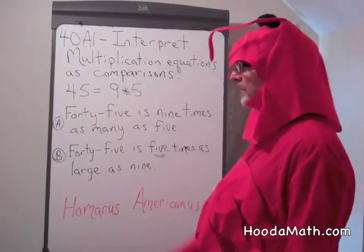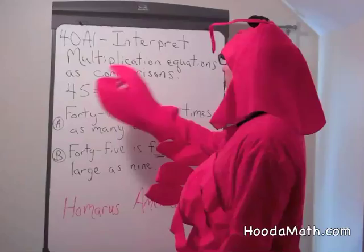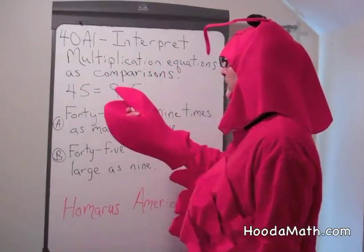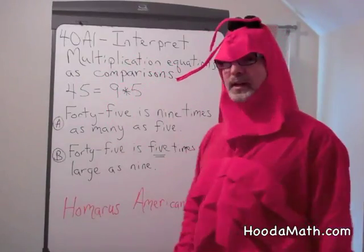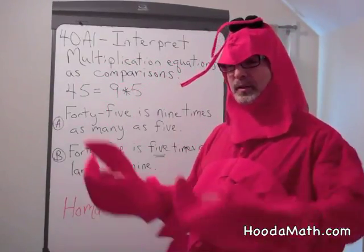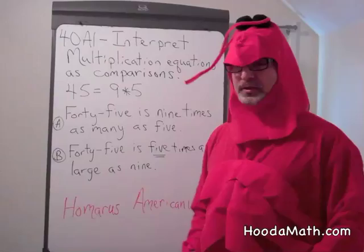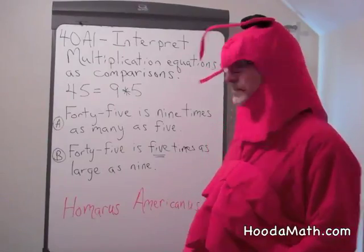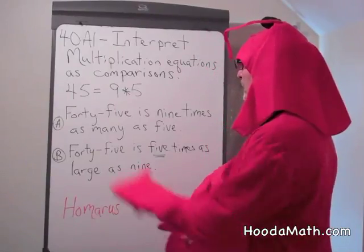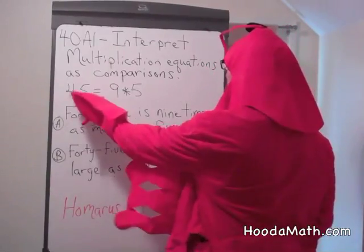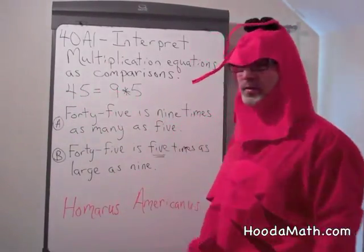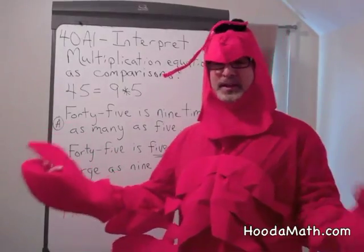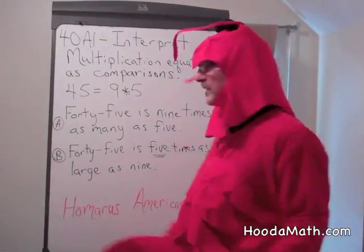Now we are going to talk about how multiplication equations really are comparisons of numbers. 45 equals 9 times 5. What does that mean?